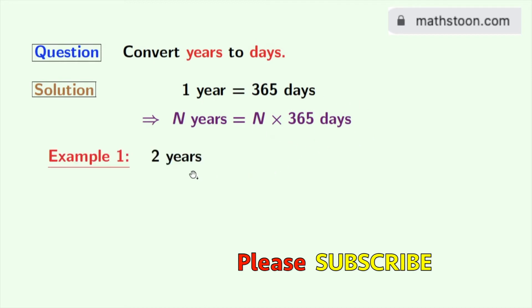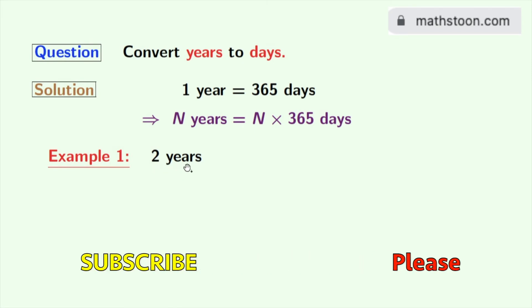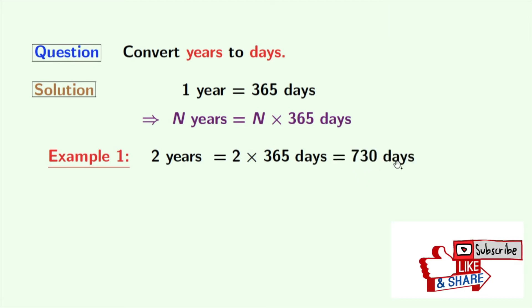Firstly, we will convert 2 years into days. So, applying this formula, we can write 2 years is equal to 2 times 365 days which is equal to 730 days.